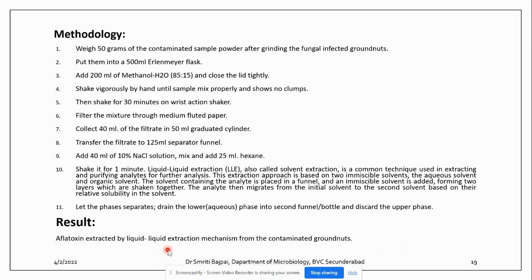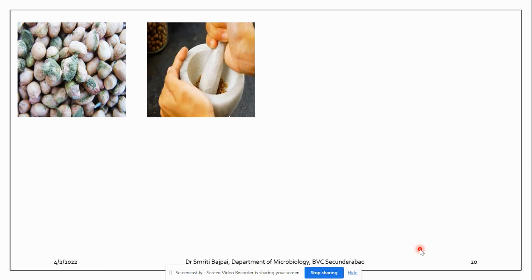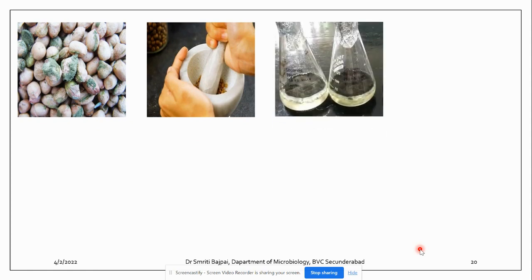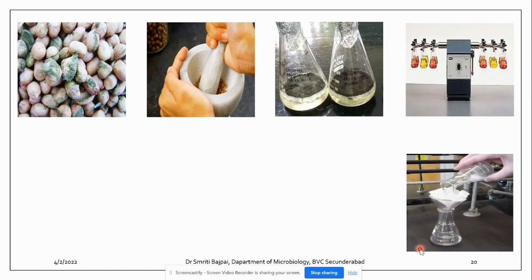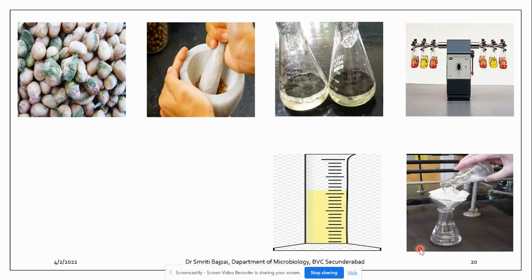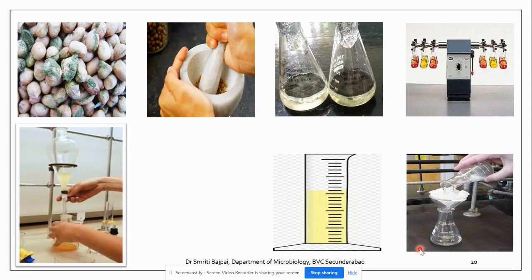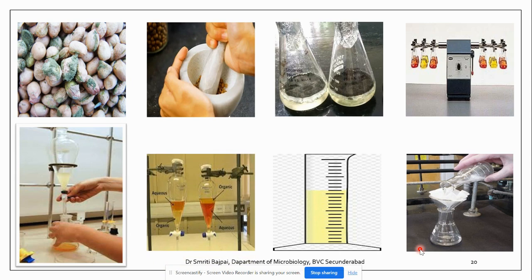In summary, aflatoxin is extracted by the liquid-liquid extraction mechanism from contaminated groundnuts. The grains were ground into powder using a mortar and pestle, mixed with solvent, filtered, transferred to a separatory funnel, and hexane was added. By this solvent extraction technique we can isolate aflatoxin, a harmful mycotoxin, from contaminated samples.